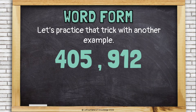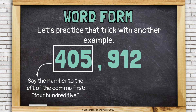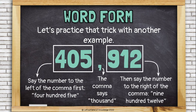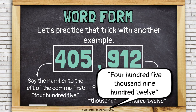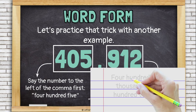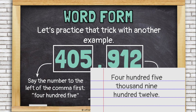Let's practice that trick with another example. Say the number to the left of the comma: 405. The comma says 'thousand.' Then say the number to the right of the comma: 912. Now put it all together: four hundred five thousand, nine hundred twelve. And finally, write it in word form: four hundred five thousand, nine hundred twelve.